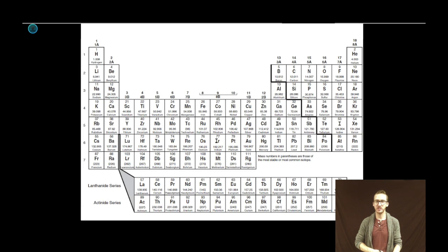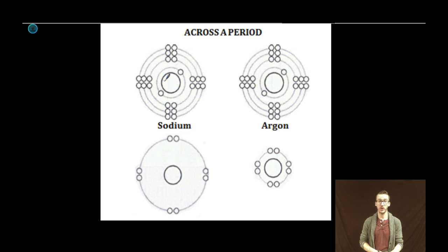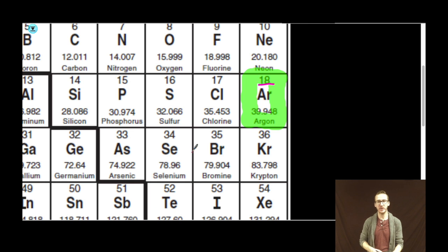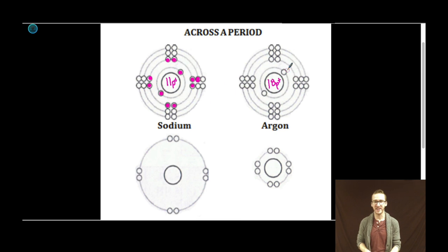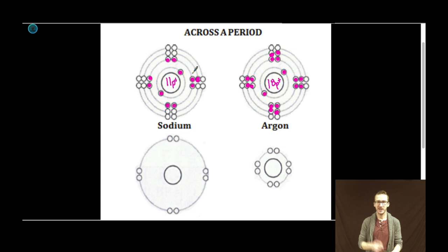Now let's take a quick look at two elements that are in the same period, or the same row. We're going to look at sodium and argon. Let's recap sodium really quickly: sodium has 11 positive protons in its nucleus and 11 negative electrons. Argon has an atomic number of 18 and therefore 18 positive protons, and neutral atoms of argon will also have 18 electrons. Our next step is to separate the valence level from the cores. The valence level for sodium is the third level, and the valence level for argon is also the third level.